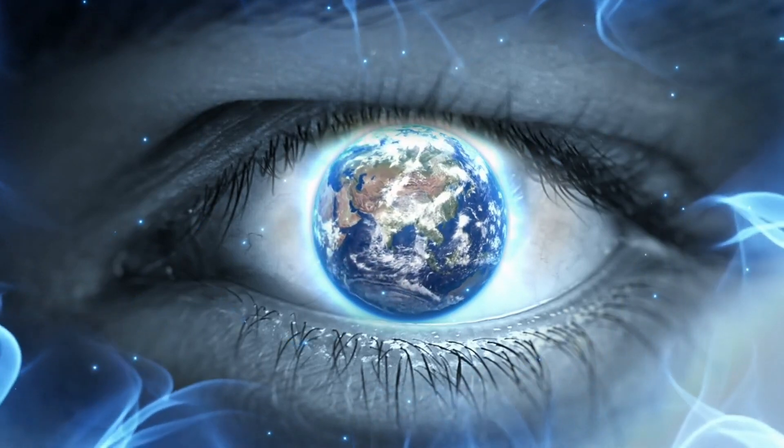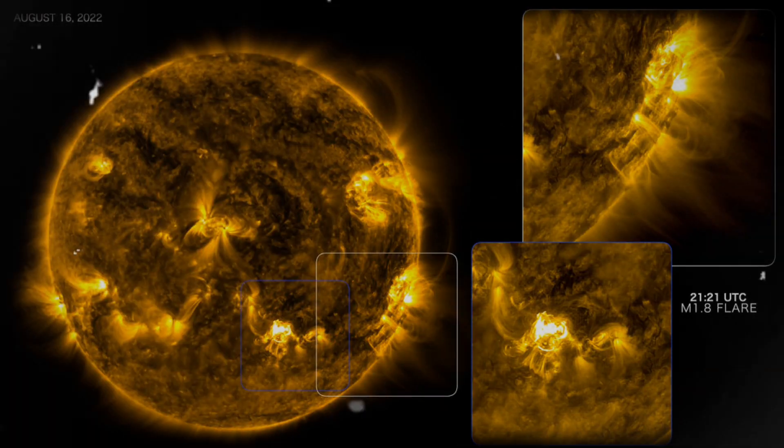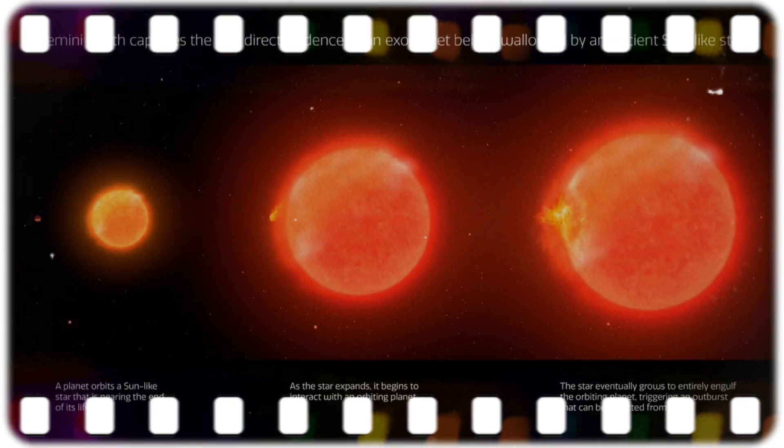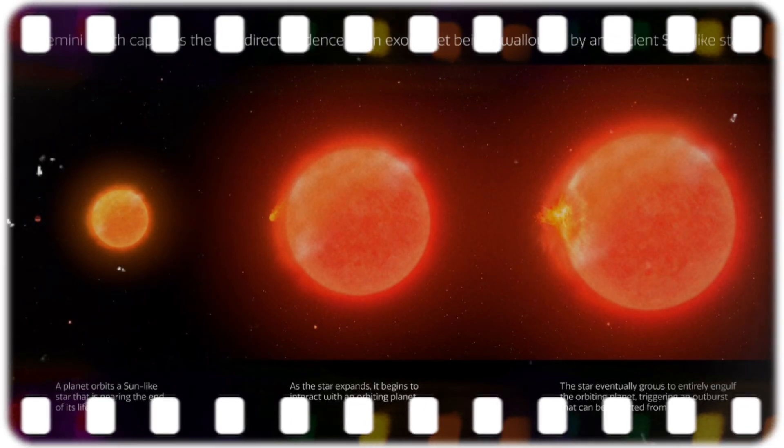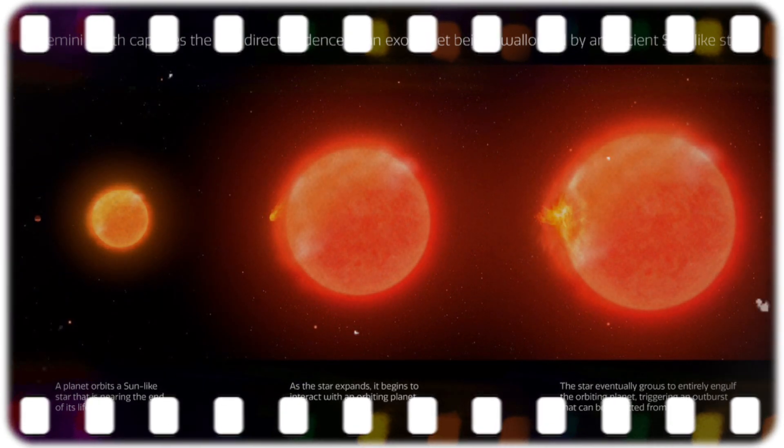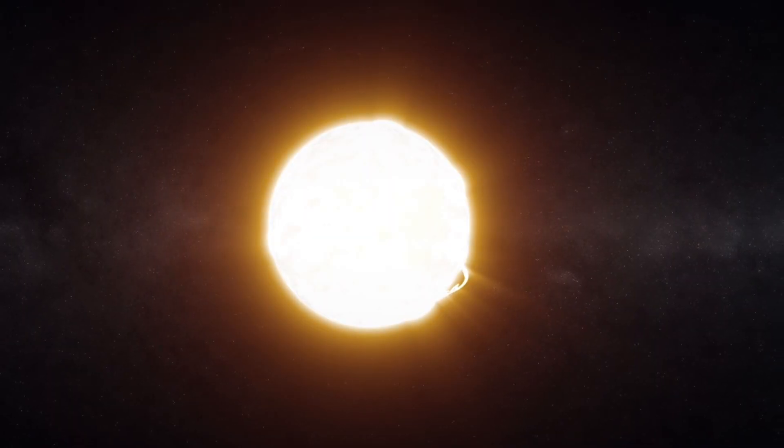Envision a world where every fraction of a second unveils a fresh facet of our celestial body. Operating at this rapid pace, SDO captures images of the sun every 0.75 seconds. This tireless rhythm of observation grants us a real-time peek into the sun's dynamic essence, capturing processes and transformations that were once concealed from our view.